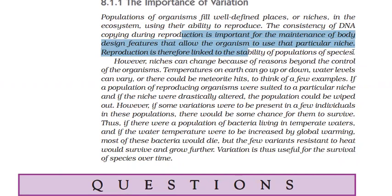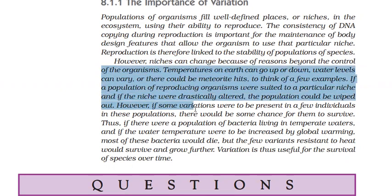However, niches can change — the place where the organism is living can be changed because of environmental factors beyond the control of the organism. Temperature can change, climate conditions can change, and water levels can be different. If a population of reproducing organisms is suited to a particular niche, and that niche is drastically altered, the population could be wiped out.